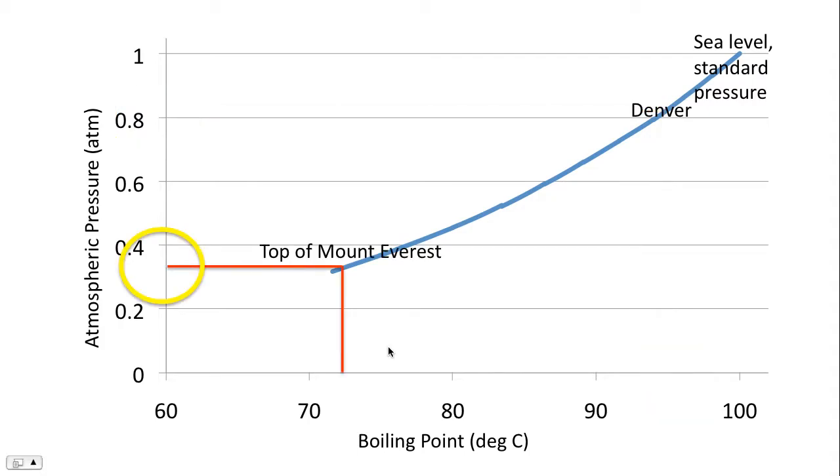Let's say we go to one of the highest mountains in the world. We go on top of Mount Everest. Notice there, there's a significant decrease in atmospheric pressure when compared to sea level. And once again, water will boil at a lower temperature.